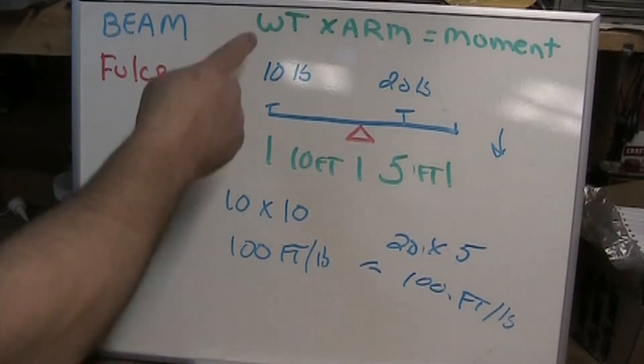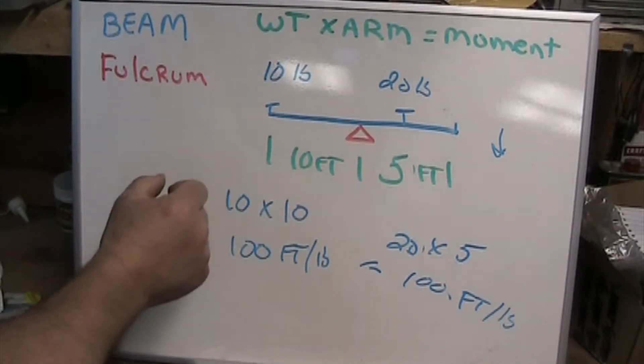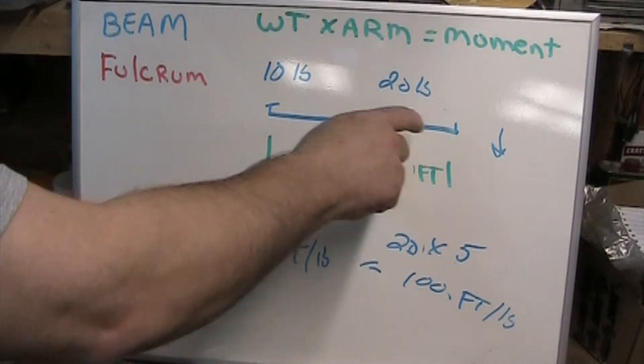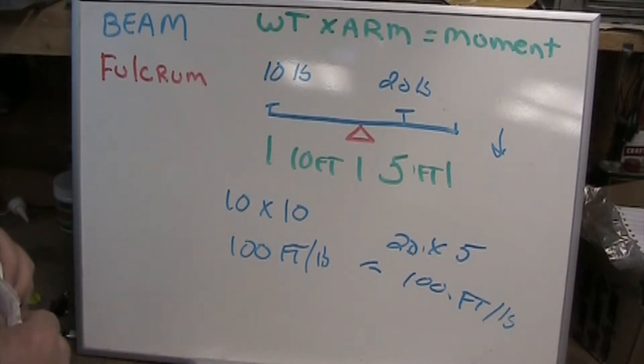We can either modulate the weight or we can modulate the distance from the fulcrum to make them equal or to take measurements. Now how does this apply to flying an airliner?